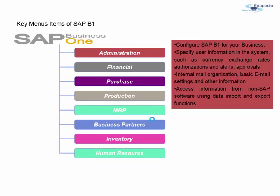Let's see some key menu items of SAP Business One. First, there is Administration, which consists of basic configuration and information you need to set up before using the software. In Administration, you configure SAP Business One for your business — specifying currency exchange rates, authorizations, alerts and approvals, and which users approve which documents.